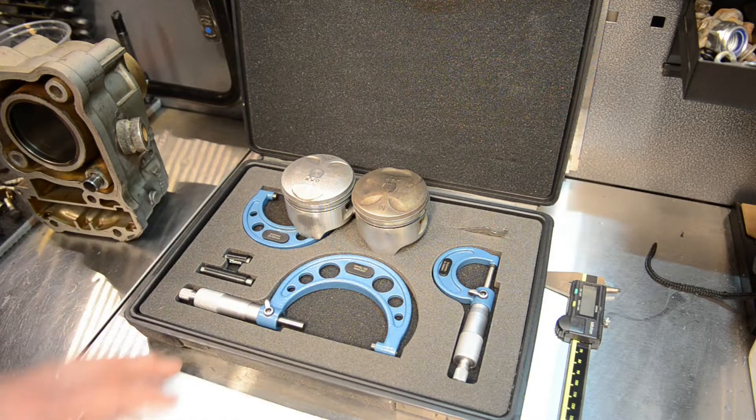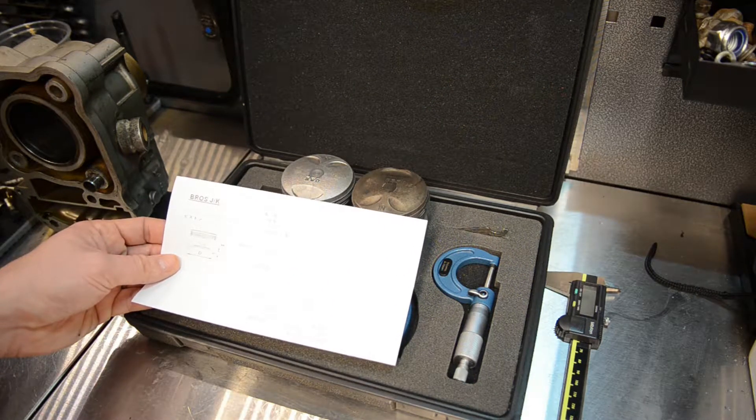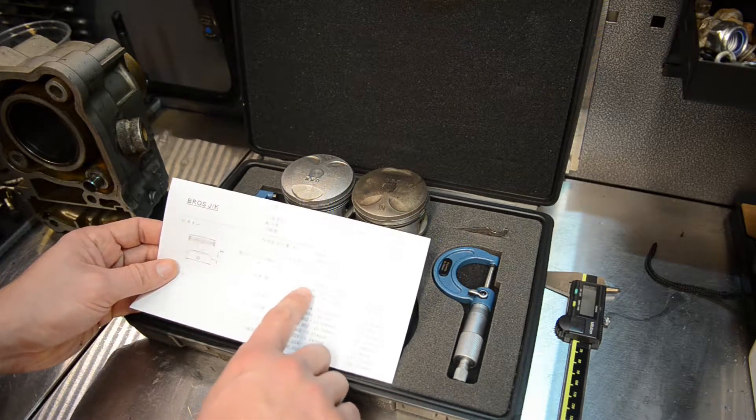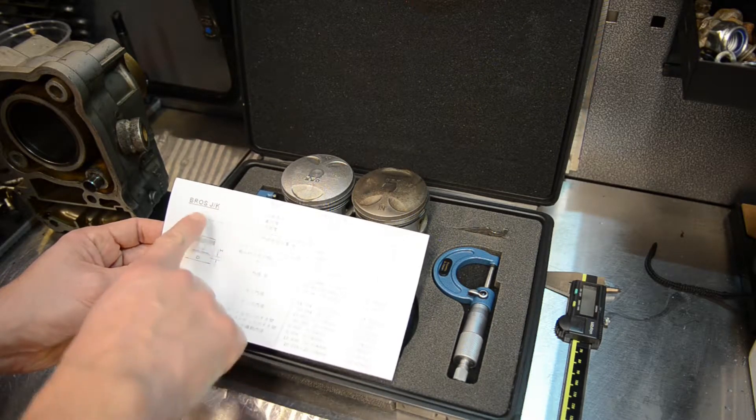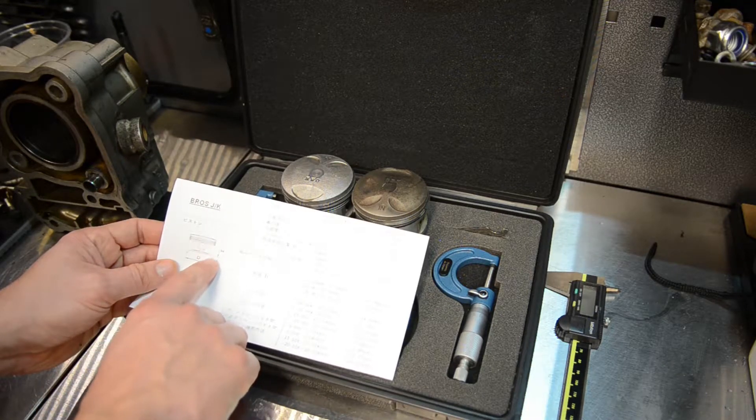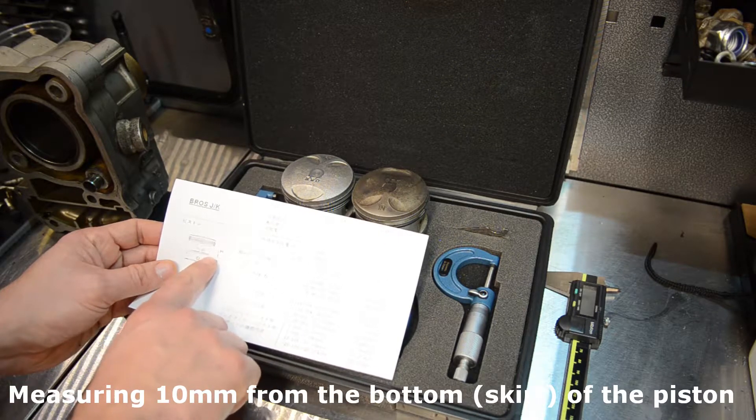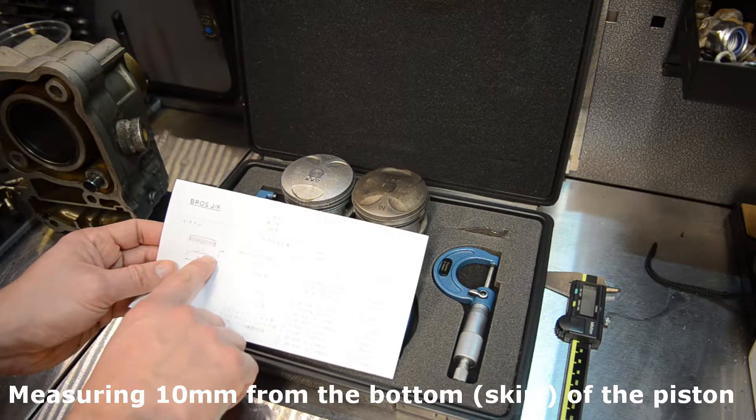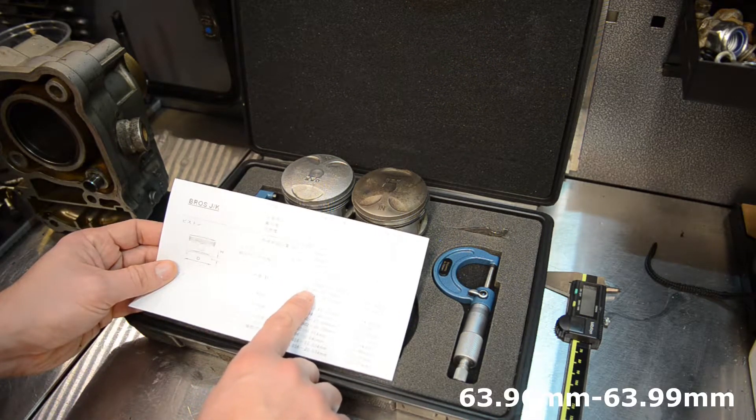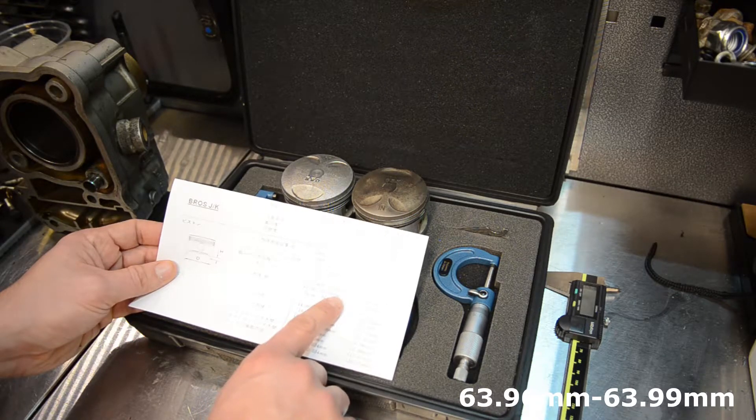You also need the manufacturer's spec. Here it is—I printed this off the internet. As you can see, the spec for this J model bike is taken here at 10mm on the skirt of the piston, and the measurement should be within 63.96 millimeters and 63.99 millimeters.